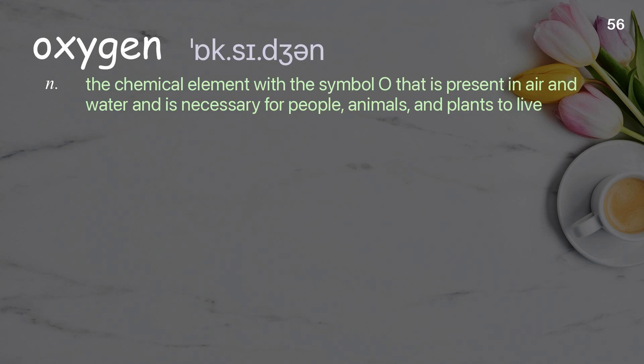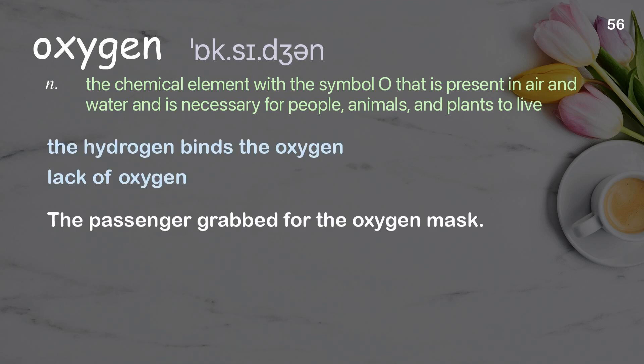Oxygen: The chemical element with the symbol O that is present in air and water and is necessary for people, animals, and plants to live. Examples: The hydrogen binds the oxygen. Lack of oxygen. The passenger grabbed for the oxygen mask.